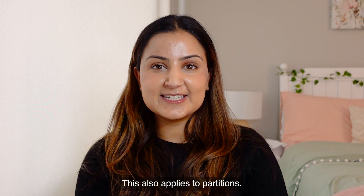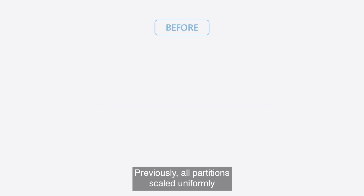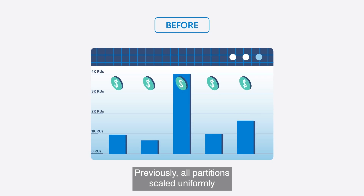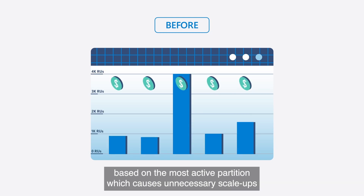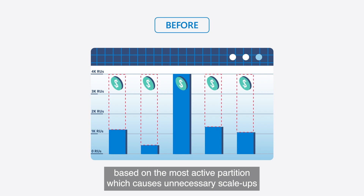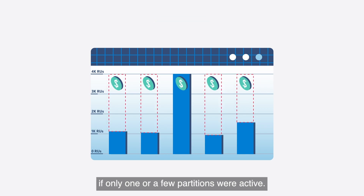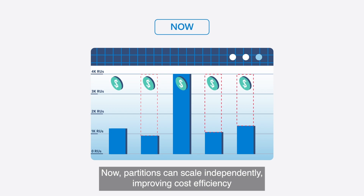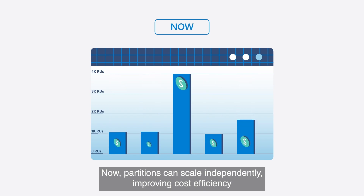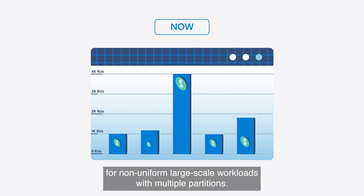This also applies to partitions. Previously, all partitions scaled uniformly based on the most active partition, which causes unnecessary scale-ups if only one or a few partitions were active. Now, partitions can scale independently, improving cost efficiency for non-uniform large-scale workloads with multiple partitions.